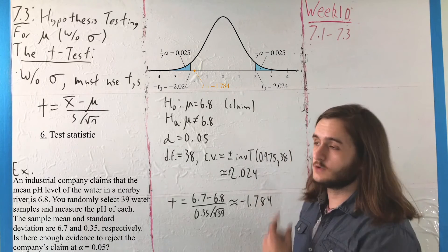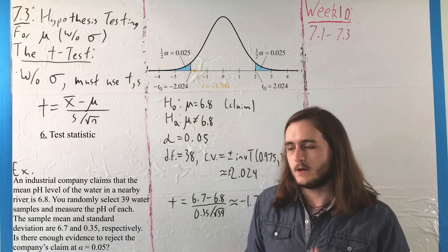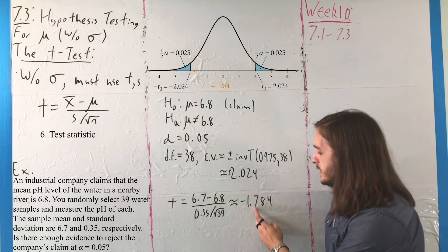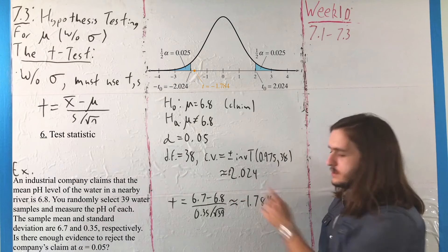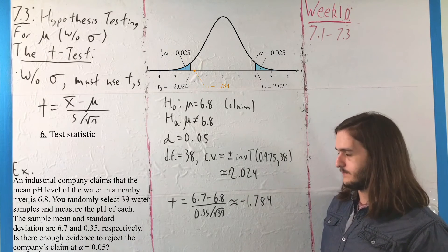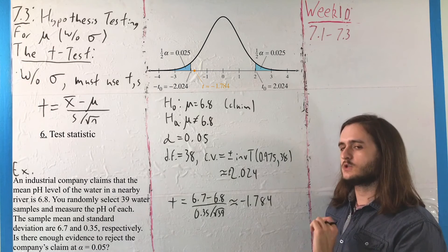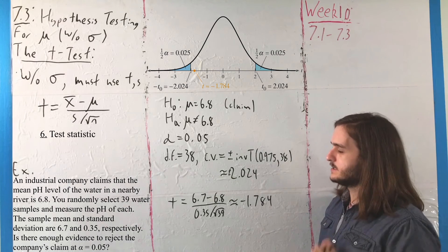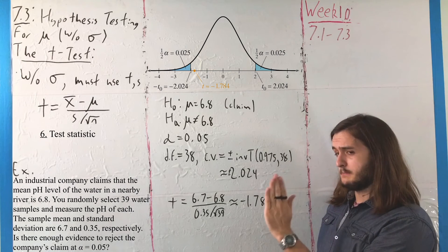So, looking at that distribution, you might have noticed it already, maybe put that picture up, but you should see that this value, negative 1.784, is bigger than the lower value. That is, it's bigger than negative 2.024, but it is also less than positive 2.024, which means, this value is in the middle.